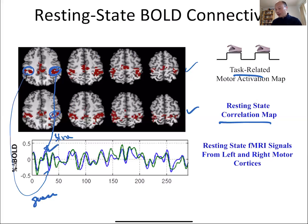One way to map primary motor cortex is to have someone tap their fingers — that's a traditional BOLD response map showing areas that light up. But you can also create a resting state correlation map: take the signal from one part of the brain and ask what other parts of the brain go up and down in the same way. This correlation map, acquired while the subject is resting quietly in the scanner, looks remarkably like the task-related BOLD fMRI map.